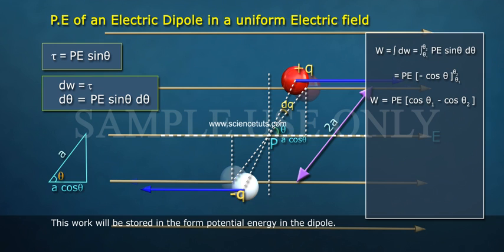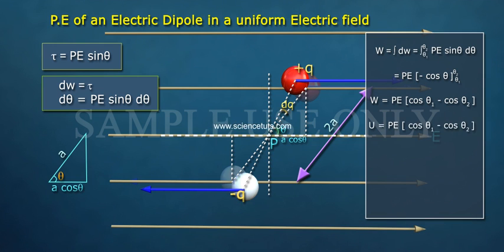This work will be stored in the form of potential energy in the dipole. U equals PE of cos theta 1 minus cos theta 2.